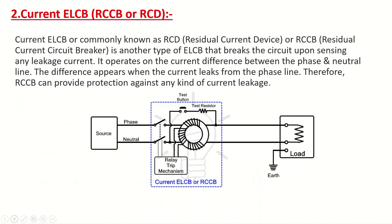Current ELCB — RCCB or RCD. Current ELCB, commonly known as RCD (Residual Current Device) or RCCB (Residual Current Circuit Breaker), is another type of ELCB that breaks the circuit upon sensing any leakage current. It operates on the current difference between the phase and neutral line. The difference appears when current leaks from the phase line, so RCCB can provide protection against any kind of current leakage.